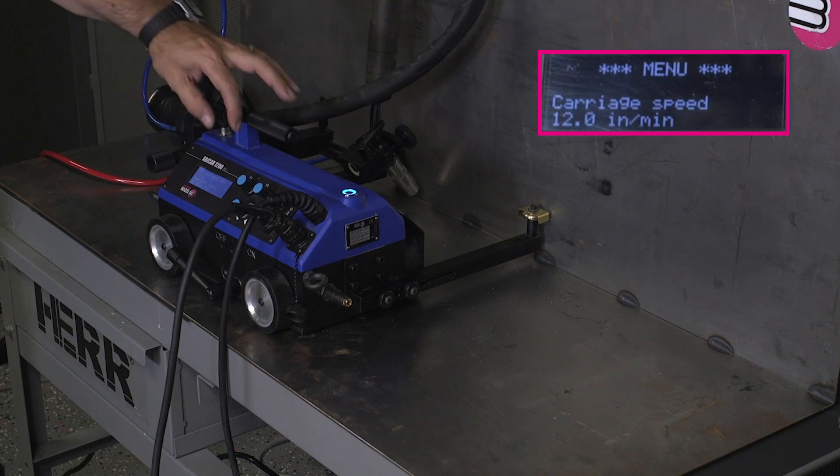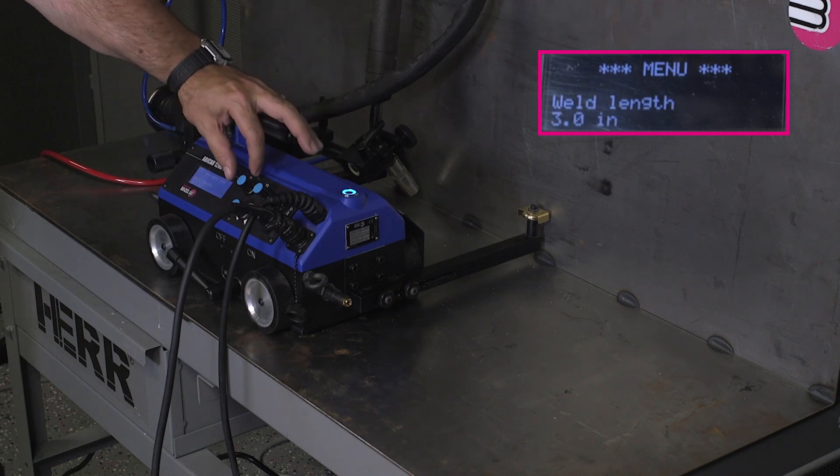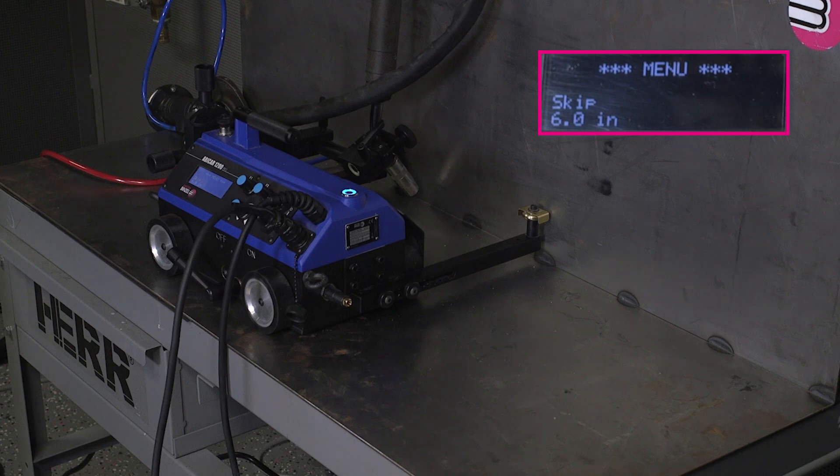We still wanted the carriage speed of 12 inches per minute. We still want the weld length of three inches. Now the skip. We want three inch welds on 12 inch centers. Once again, 12 minus three.